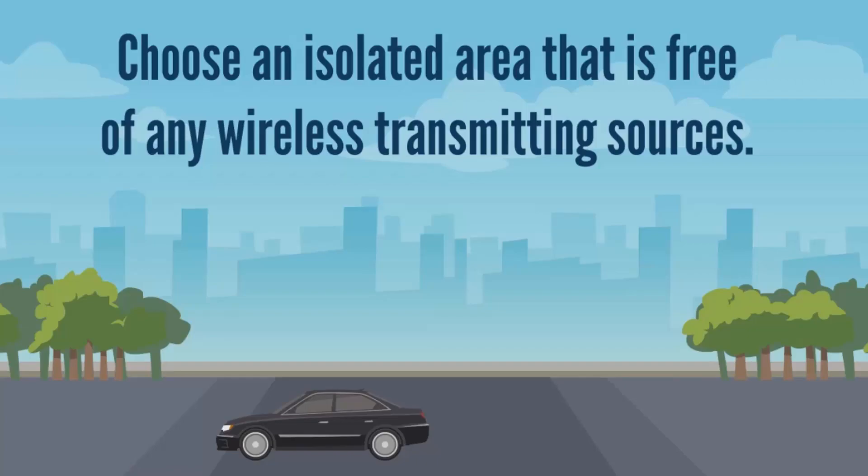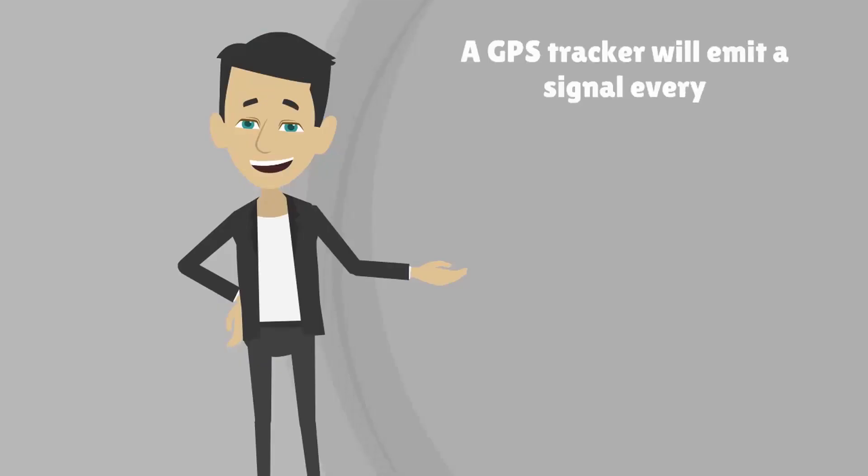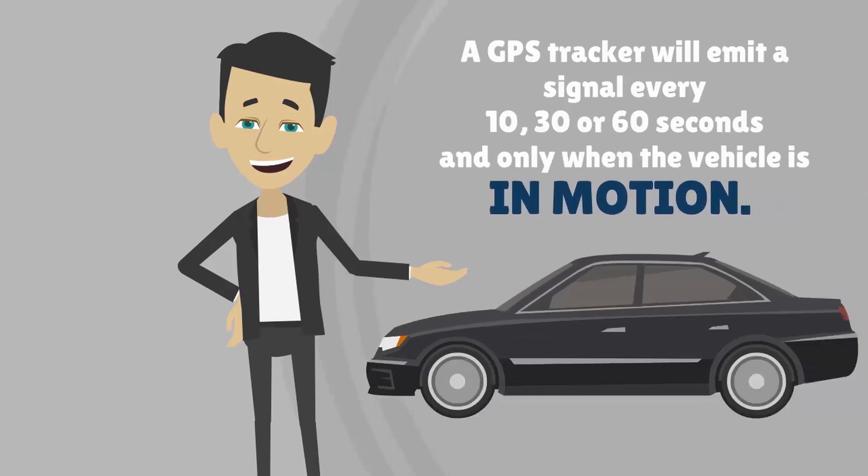A GPS tracker will emit its location signal only while the vehicle is in motion and usually at an interval of every 10, 30 or 60 seconds apart.